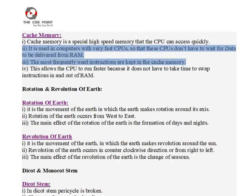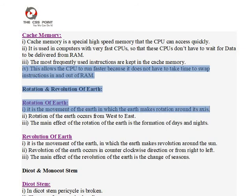3. The most frequently used instructions are kept in the cache memory. 4. This allows the CPU to run faster because it does not have to take time to swap instructions in and out of RAM.